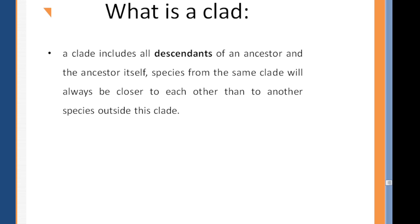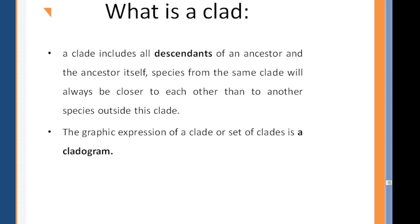To summarize the concept: we start from an ancestor, and from this ancestor we find descendants grouped according to a specific characteristic. All beings sharing that characteristic from the ancestor are grouped into what we call a monophyletic group, presented as a clade. All individuals within the clade are close to each other because they share the same characteristic.